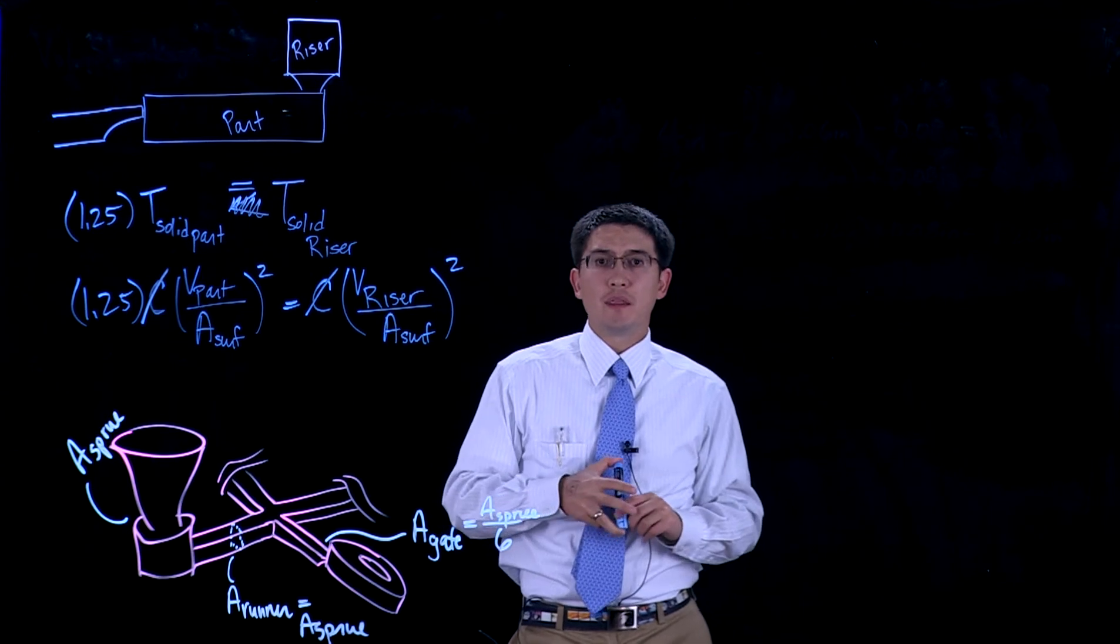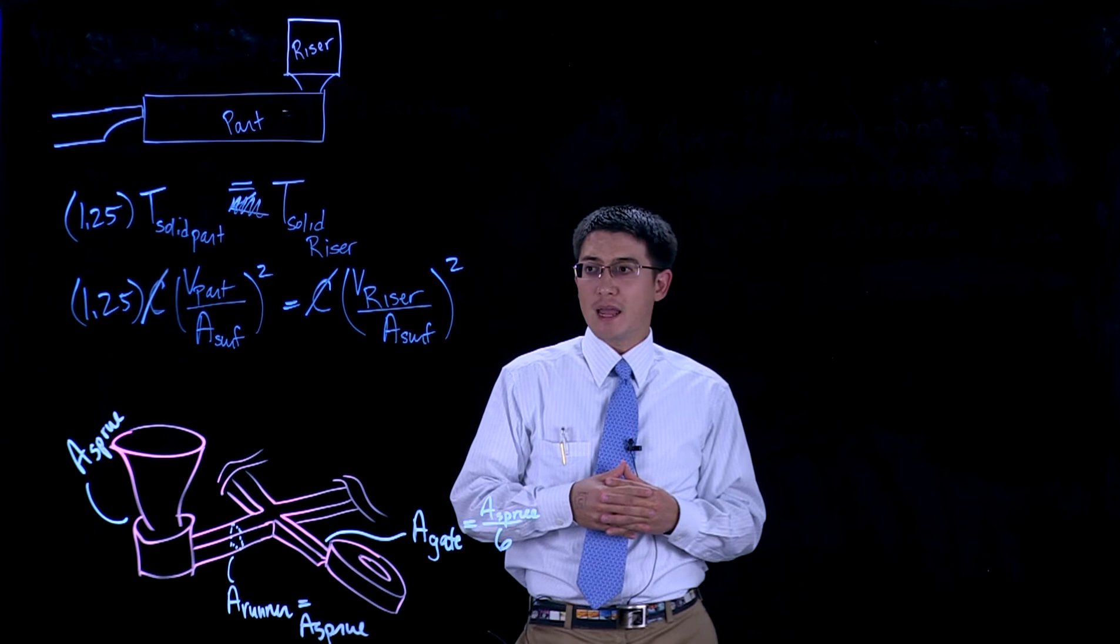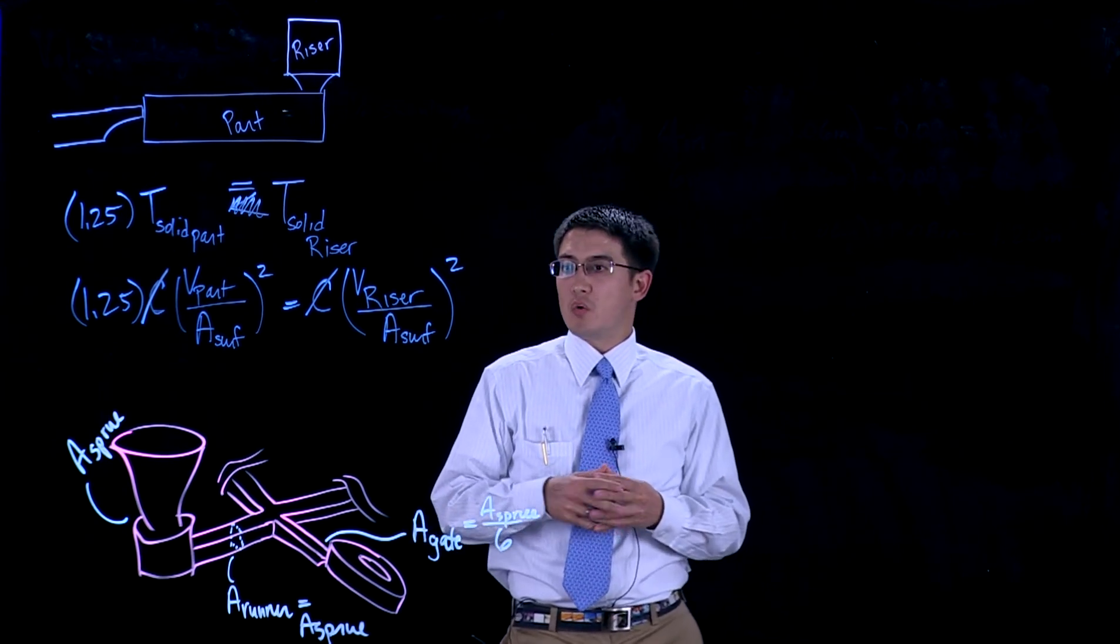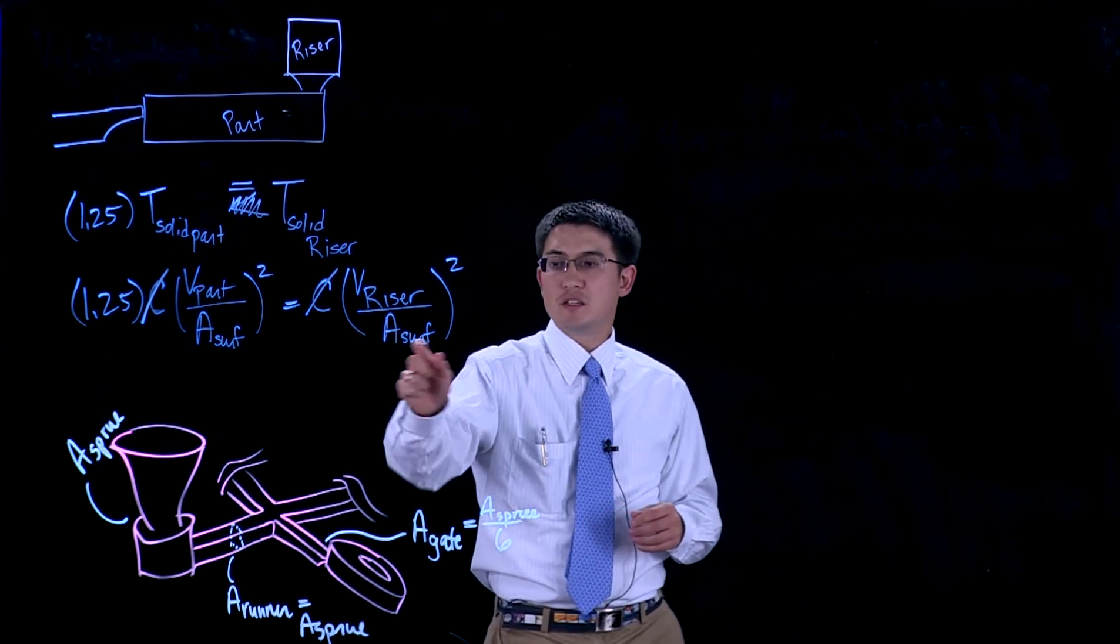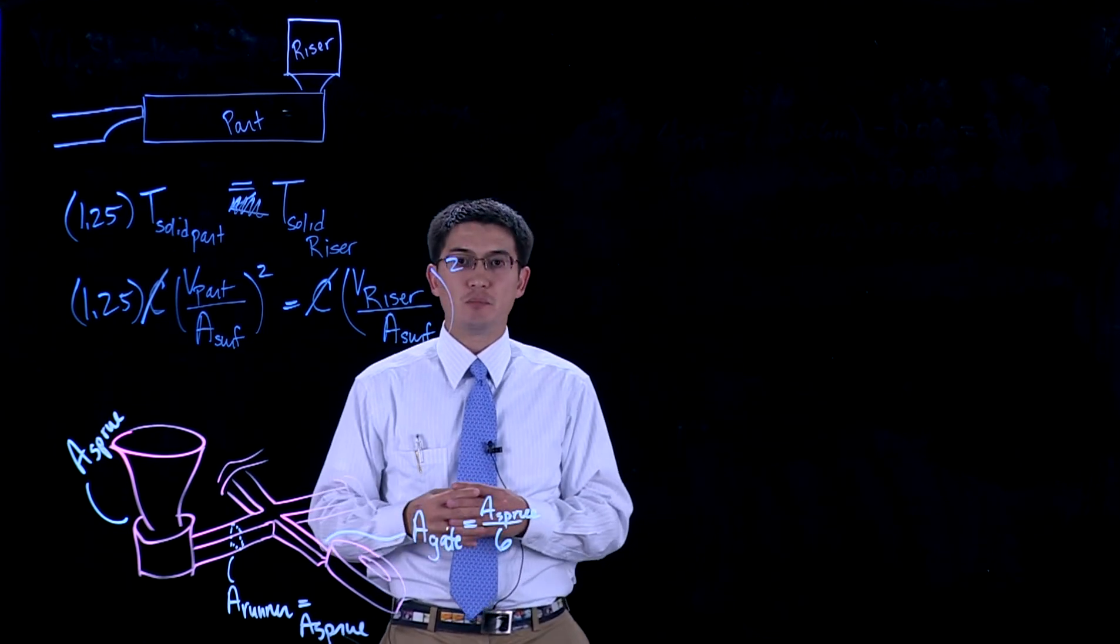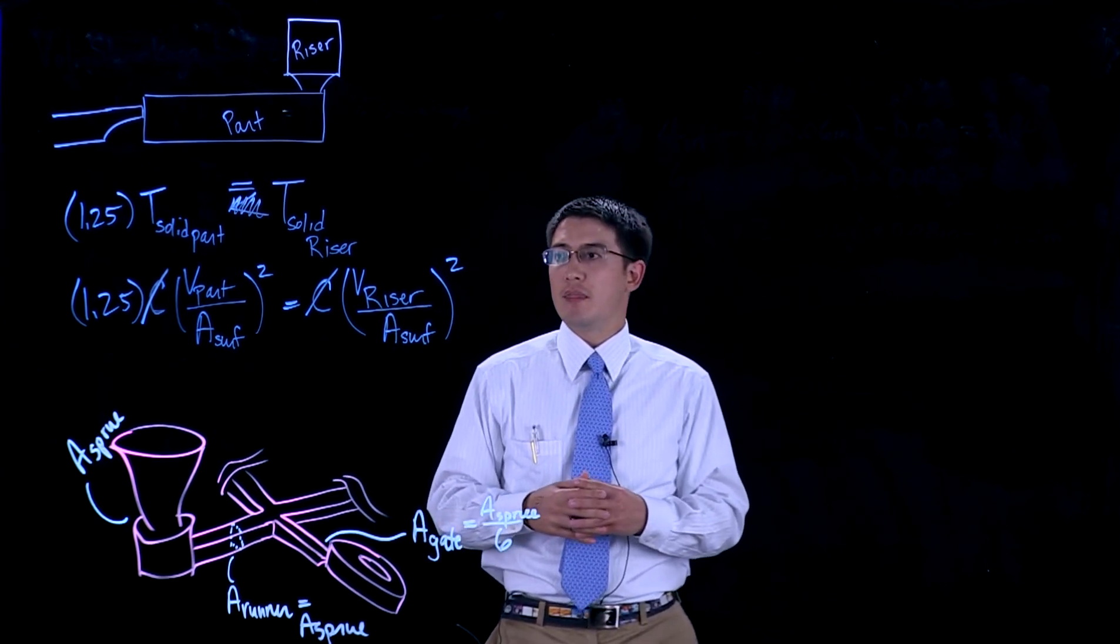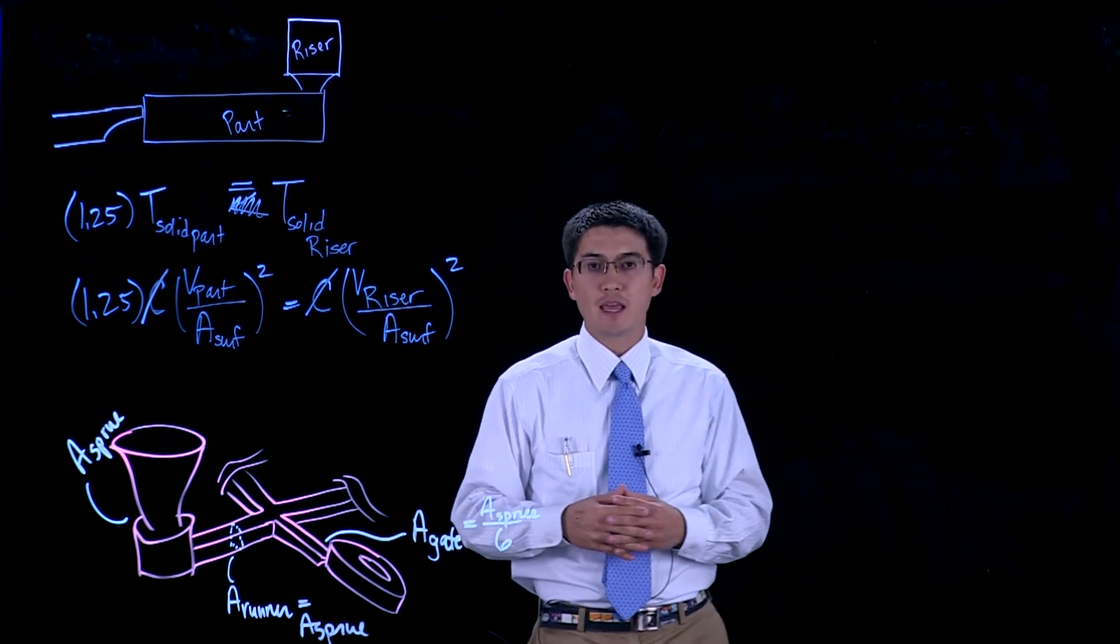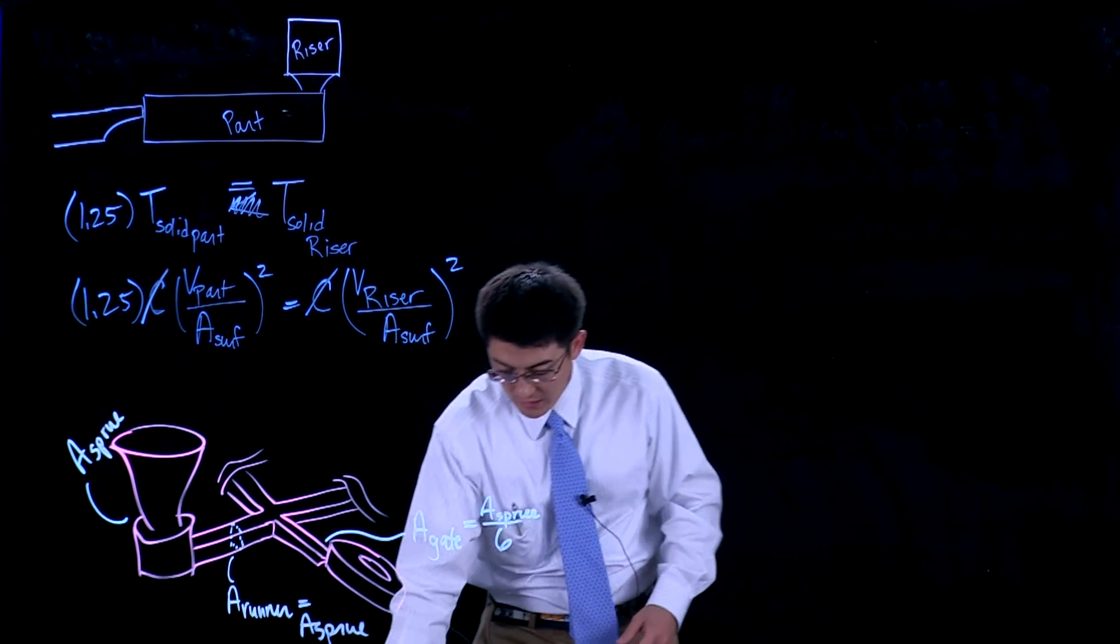We know that we're going to be using a cylindrical riser, and in the problem statement it said that the diameter to the height was one to one. So we can then calculate a ratio for the surface area as well as the volume, should give us only one unknown variable on this side. Everything on this side should be known, be a small amount of math to plug all that in, which we'll do. And then we should be able to find an expression to solve for the diameter for the riser using Chvorinov's rule here.